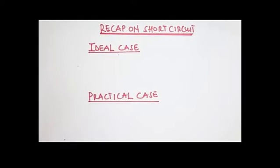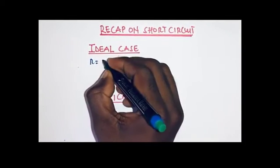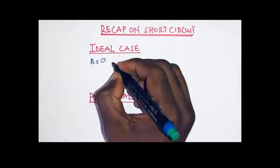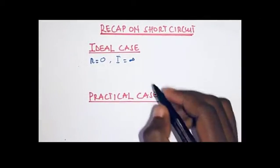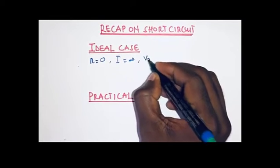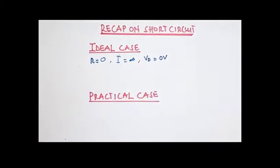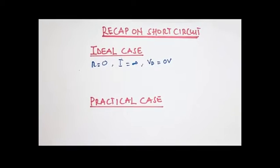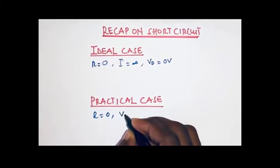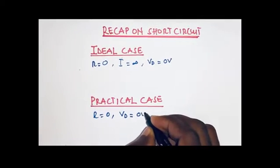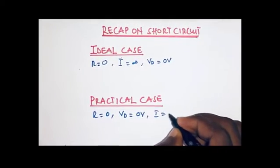We concluded that for the ideal case, we have a low resistance path. That means that a very high amount of current — that is, an infinite current — flows through the path, and then the voltage drop across the path was also experienced to be zero volts. However, for the practical case, even though we had a very low resistance path with the voltage drop across the path being equal to zero volts, we experienced that the current was rather finite.